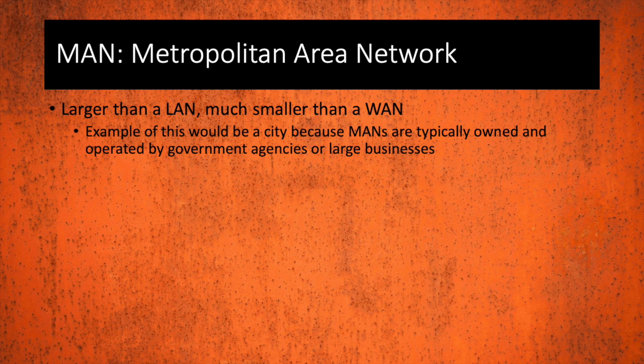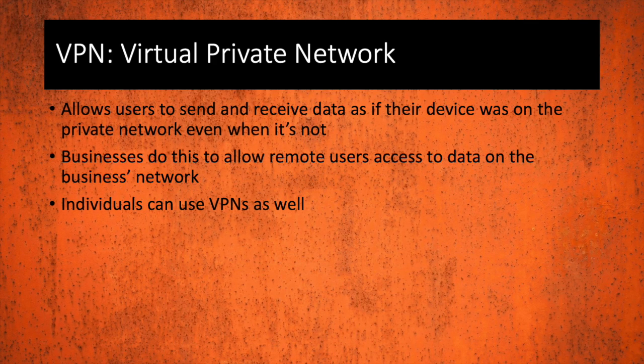A MAN is a metropolitan area network. This network is larger than a LAN but much smaller than a WAN. A great example would be a city, because MANs are typically owned and operated by either government agencies or large businesses. VPN is virtual private network. This allows users to send and receive data as if their device is on the private network itself when it's really not. Lots of businesses use this to allow remote users to access data on the business network when they are at home, on a business trip, or out in the field working.